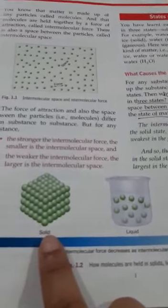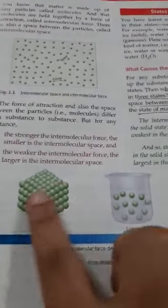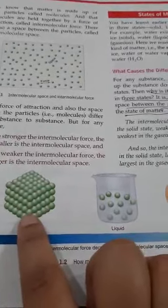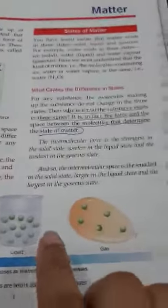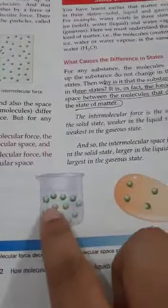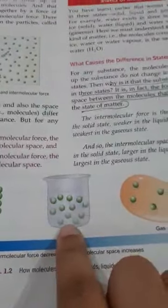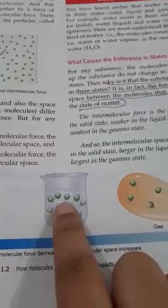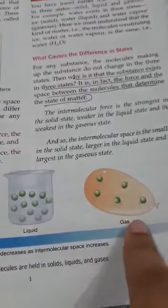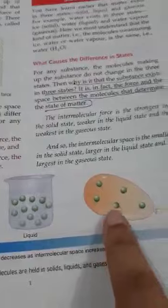In this figure, we can easily see that in the solid state, the molecules are arranged very closely. There is no intermolecular space between the molecules. But in the liquid state, it has a little bit of force and some intermolecular space. In the gaseous state, there is no intermolecular force but there is a large intermolecular space.